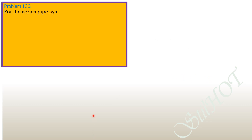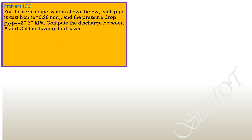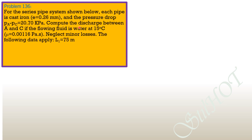Here is a problem on series pipe system. For the series pipe system shown below, each pipe is cast iron with an absolute roughness of 0.26 mm, and the pressure drop P_A minus P_C is 20.7 kilopascals. Compute the discharge between A and C if the flowing fluid is water at 15 degrees Celsius with viscosity of 0.00116 pascal-seconds. Neglect minor losses.